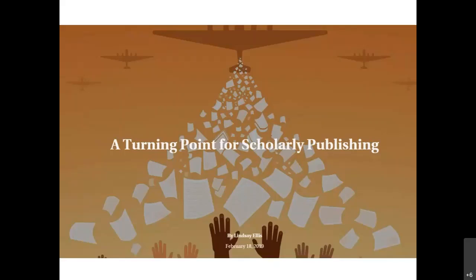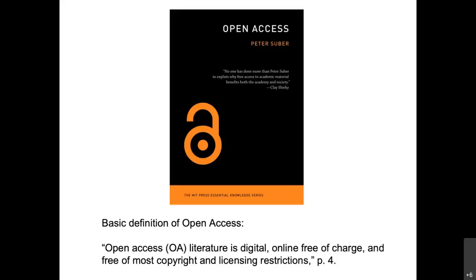Within the last couple of weeks the Chronicle of Higher Education released its annual trends report. Not surprisingly, the majority of items referenced were related to the pandemic. But a couple years ago one of their main trends was actually open access — titled 'A Turning Point for Scholarly Publishing.' This is significant because most discussion around open access has typically been within the library world, but this conversation is broadening to the rest of the academy.